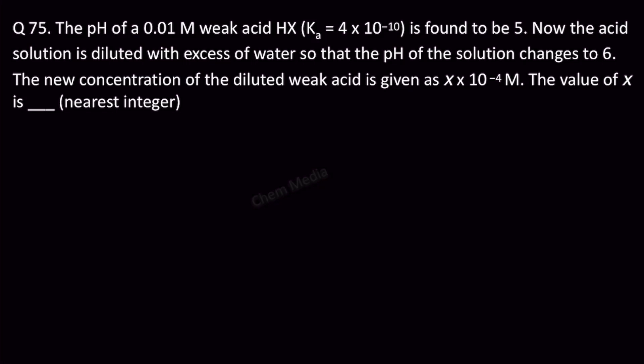Hello everyone, here is a question based on Oswald's dilution law. The pH of a 0.01 molar weak acid HX with dissociation constant 4 times 10 to the power minus 10 is found to be 5.